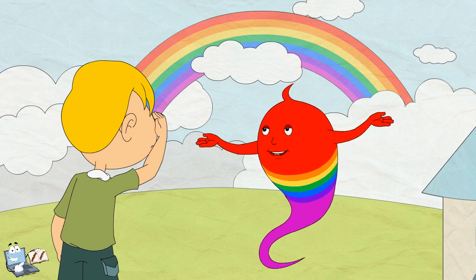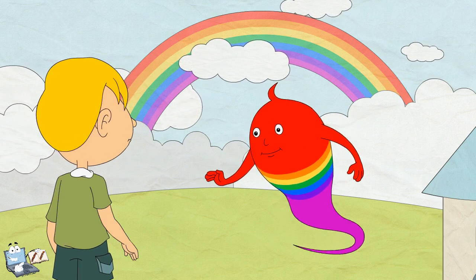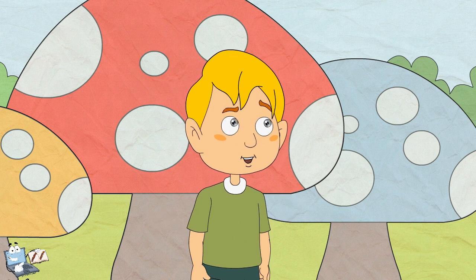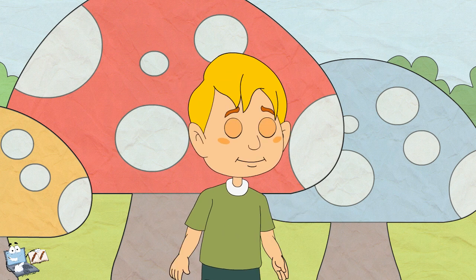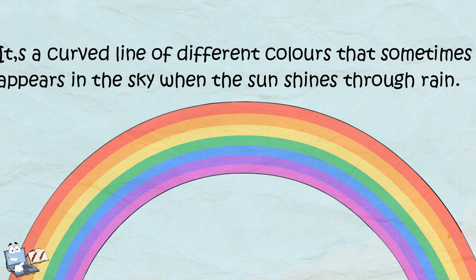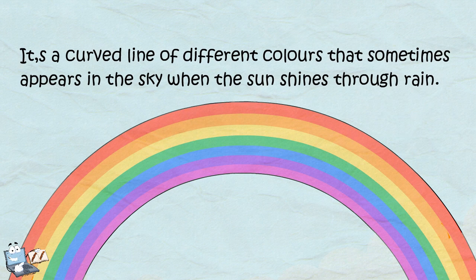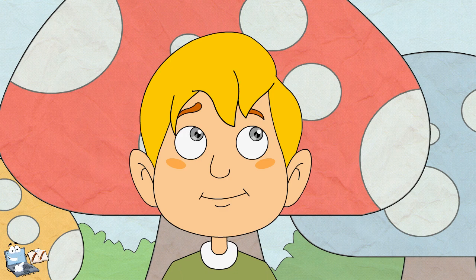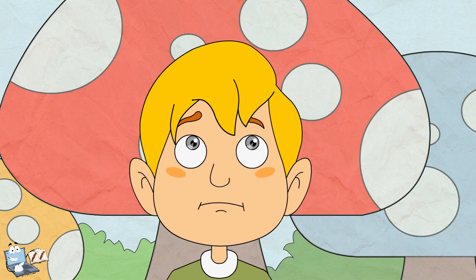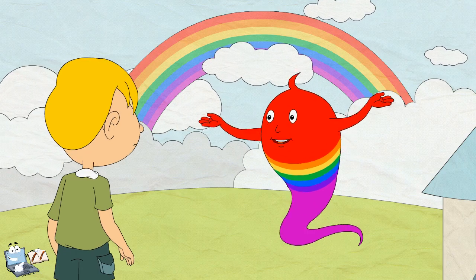This is a rainbow. Do you know what a rainbow is? Oh no, I don't know. Can you tell me what a rainbow is? It's a curved line of different colors that sometimes appears in the sky when the sun shines through rain.